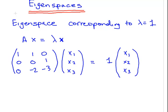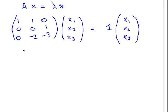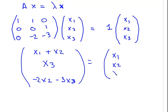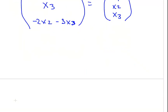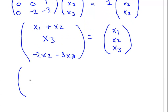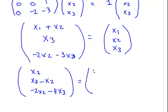Finally, lambda equals 1, get the eigenspace of that. Same drill again. x1 plus x2, x3 minus 2x2 minus 3x3. That is equal to 1 times x1, x2, x3. What we get is x2, x3 minus x2, and minus 2x2 minus 4x3. That is equal to 0, 0, 0.